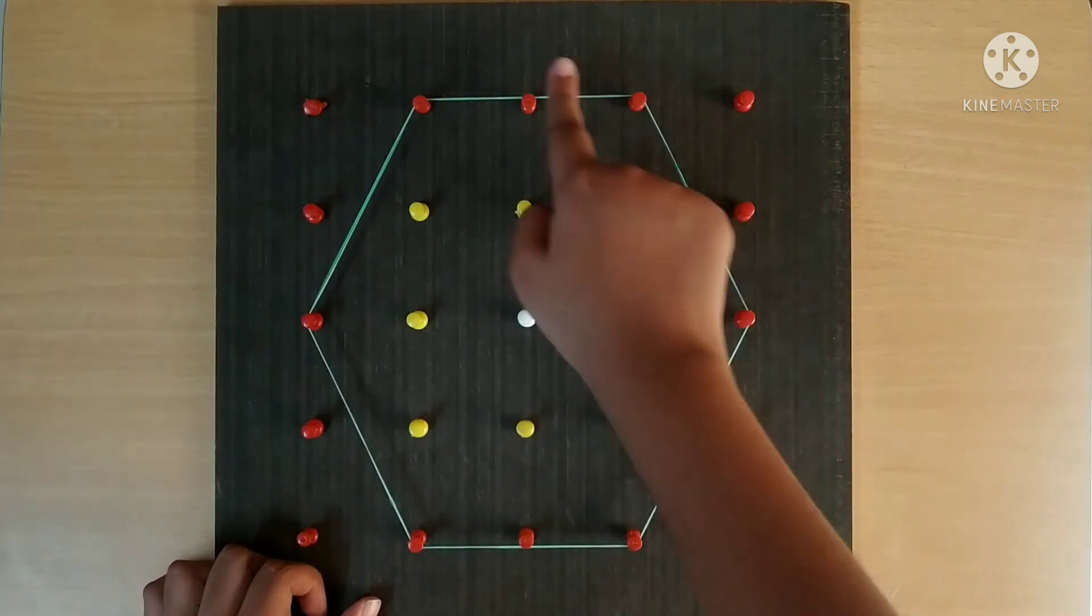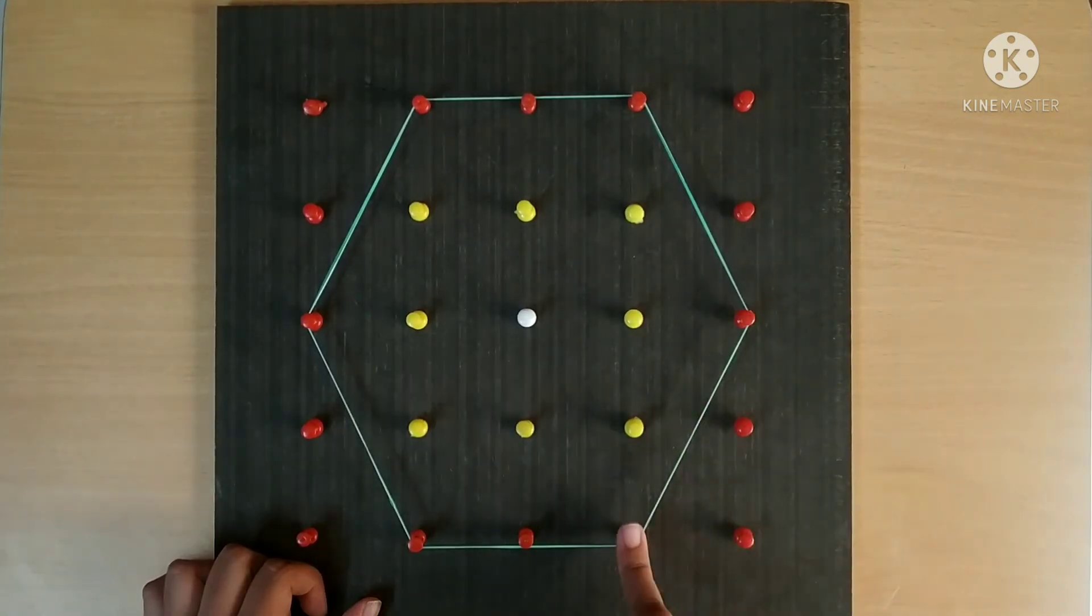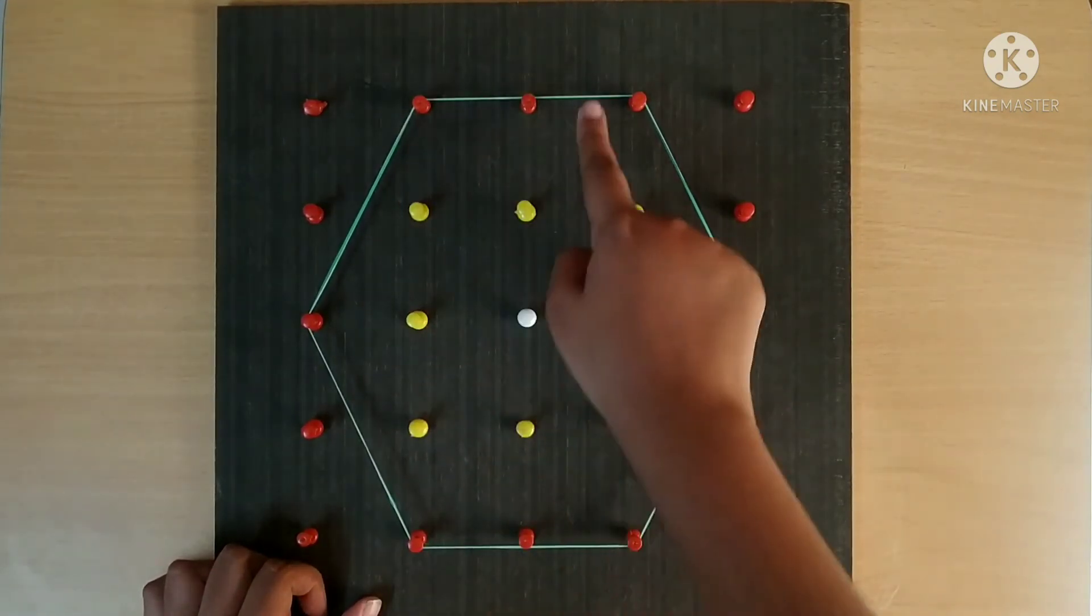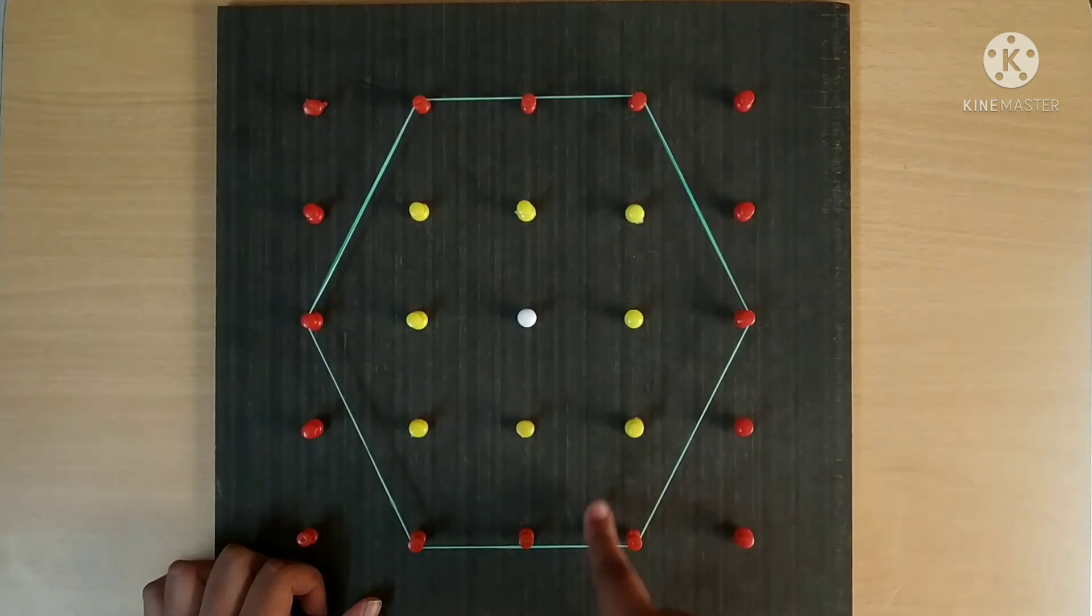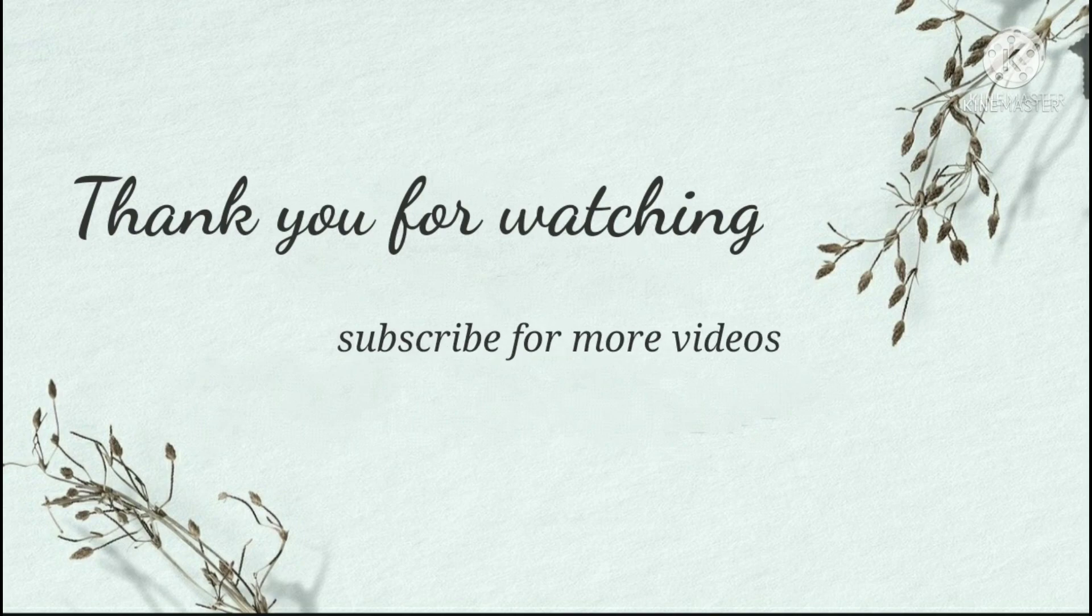A hexagon has 6 sides, 6 vertices, 6 angles.